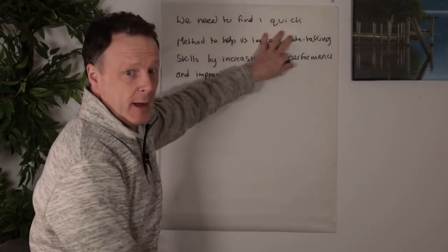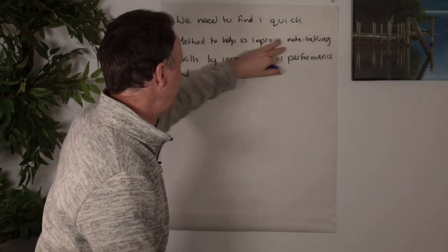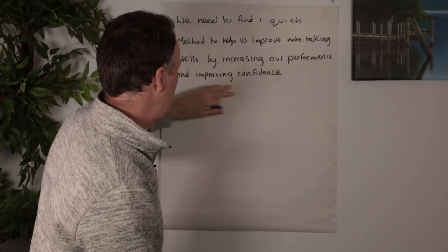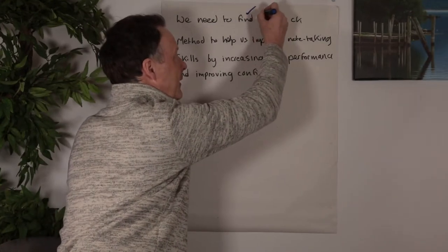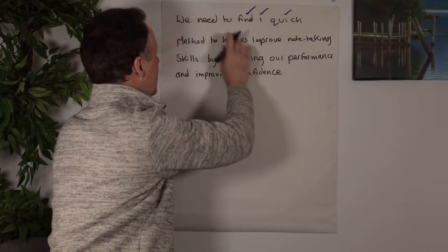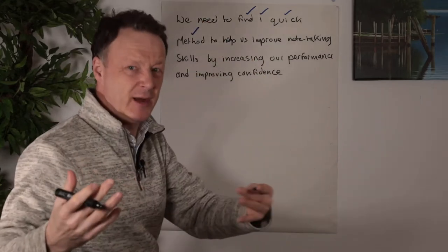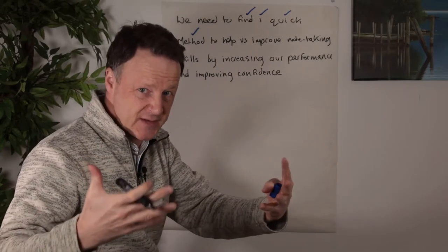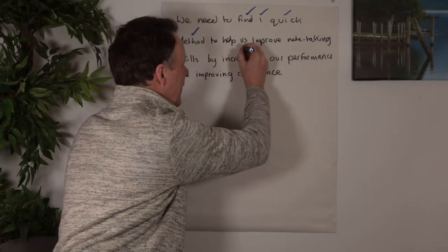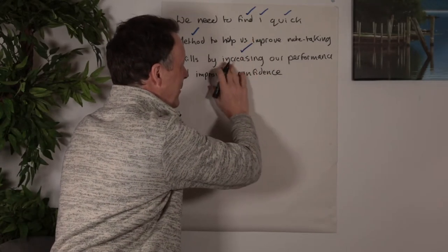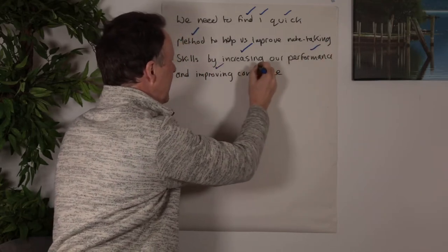So here we've got, we need to find one quick method to help us improve note-taking skills by increasing our performance and improving confidence. So on the deep filtering, I'd keep find, I'd keep one, I'd keep quick, I'd also keep method. But to help us improve note-taking skills, I probably wouldn't include that because I know that's what this is about. And so I don't need to include it. But what I would include, I want to know what exactly you're aiming for. So we're aiming for increasing performance and improving confidence.